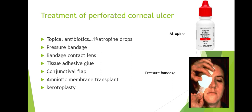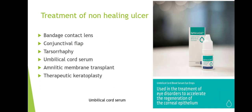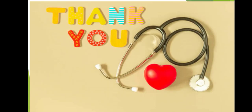Also for descemetocele: conjunctival flap, amniotic membrane transplant. Treatment of perforated corneal ulcer: topical antibiotics, pressure bandage, bandage contact lens, tissue adhesive glue, conjunctival flap, amniotic membrane transplant, and keratoplasty. Treatment of non-healing ulcer: bandage contact lens, conjunctival flap, tarsal therapy, umbilical cord serum, amniotic membrane transplant, and therapeutic keratoplasty. Thank you.